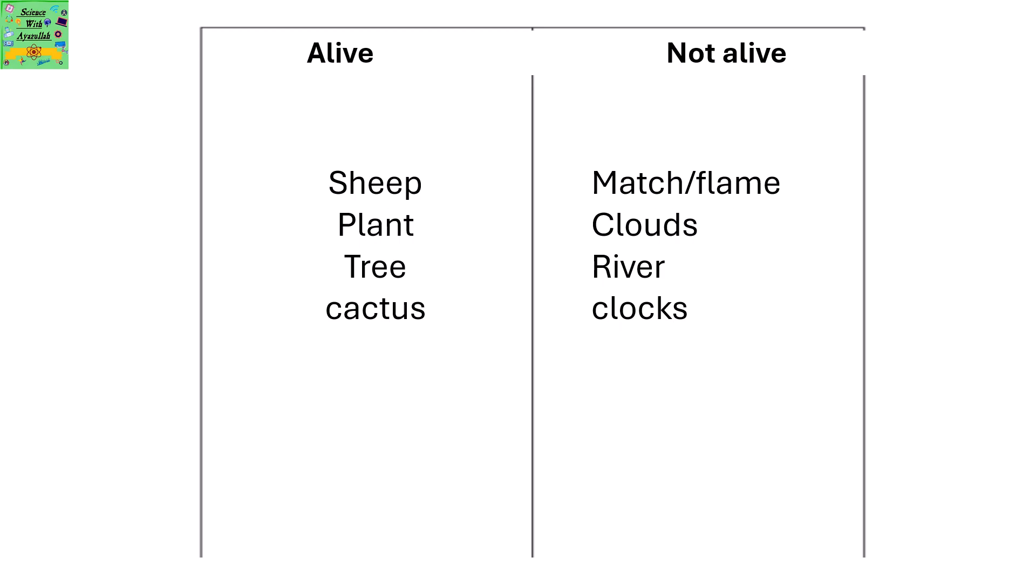In the group or the column of alive comes sheep, plant, tree and cactus. In the column of not alive comes match or flame, clouds, rivers and clock.